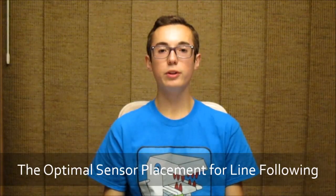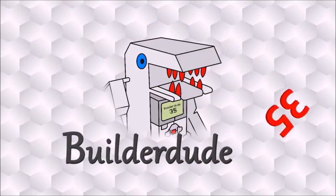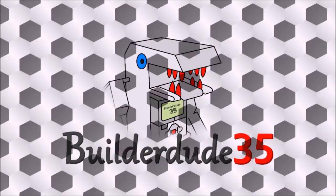Where's the best place on your robot to put your color sensors for line following? Today I'm addressing a question that's very frequently asked by my viewers.